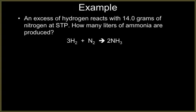We're going to look at our last example of how that might look. We have an excess of hydrogen reacts with 14 grams of nitrogen at STP. They'll either flat out say STP, or they will give you the temperature and pressure conditions that you'll have to recognize are STP. We want to know how many liters of ammonia are produced. We're starting with 14 grams of nitrogen, and we want to know how many liters of ammonia are produced.